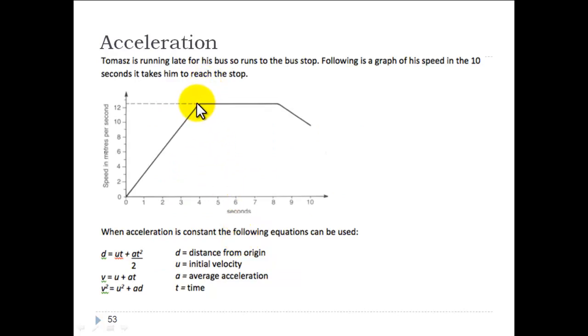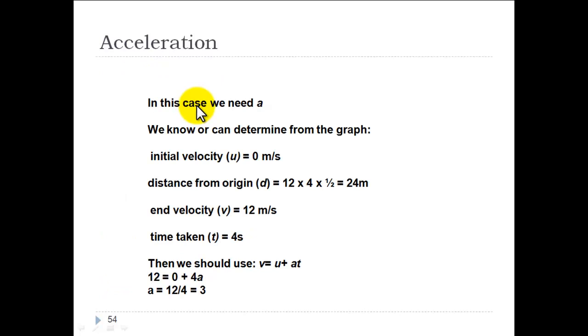You get your end velocity V, which is 12 metres per second. Time taken is T, so that is 4 seconds. Here's your final velocity, which is 12 seconds. And time taken T is 4 seconds. Then we can use the formula V equals U plus A times T. Plugging in the variables that we have, you get velocity 12 equals 0 plus 4 times the average acceleration. And solving for A, you get average acceleration equals 12 divided by 4, which equals 3.